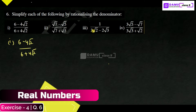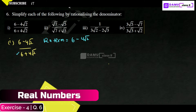To rationalize, the denominator value is 6 plus 4 root 2. The rationalizing term will be 6 minus 4 root 2 — we keep the terms the same but only change the symbol. We then multiply and divide by 6 minus 4 root 2.